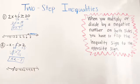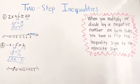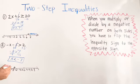Are you going to shade to your left or to your right? And is it going to be an open circle or a closed circle? Since it is just a greater than — not greater than or equal to — it's going to be an open circle at negative 7. And hopefully you're shading to your left.